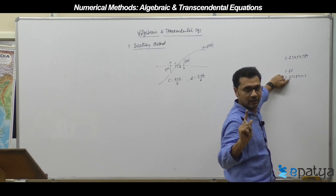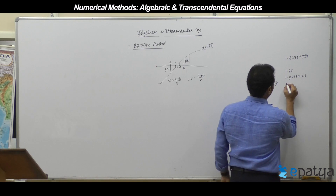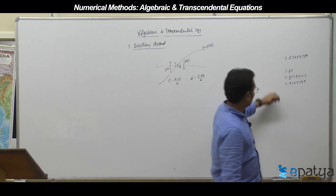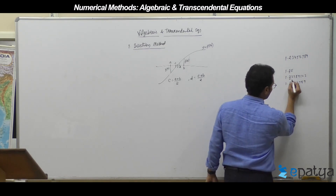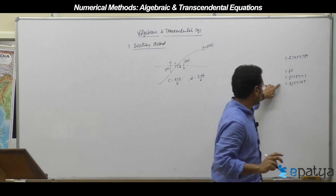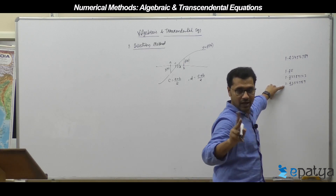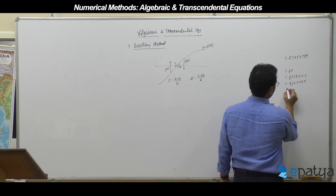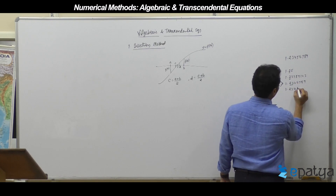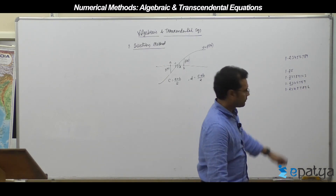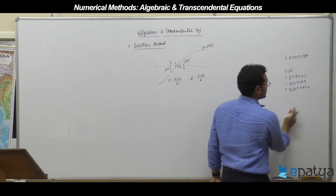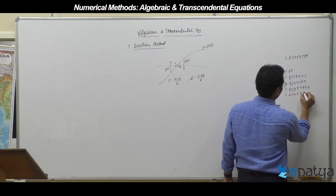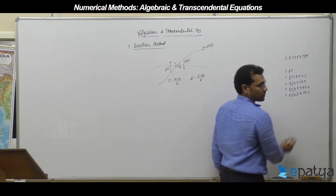In the next iteration, if 2 decimal places repeat between consecutive results, you already have accuracy up to 2 decimal places. Continuing: after getting 1.23457896, comparing with the previous result, up to 3 decimal places you already have accuracy. After certain further iterations, you achieve accuracy up to 4 decimal places.